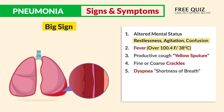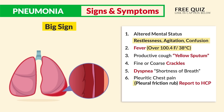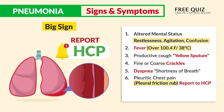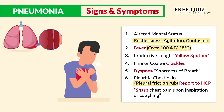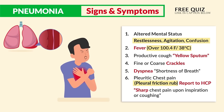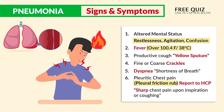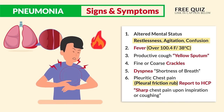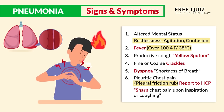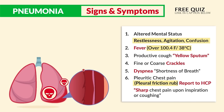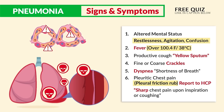The biggest sign that pneumonia is getting worse is pleuritic chest pain with pleural friction rub — this must be reported to the HCP. It's described as a sharp chest pain upon inspiration or coughing, sometimes described as stabbing or burning pain that increases upon inspiration or with a cough. Pleurisy is a major complication of pneumonia as inflamed lung tissues rub together.